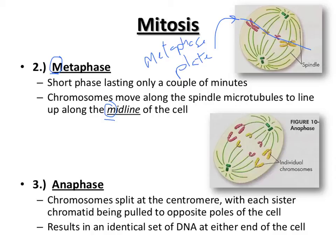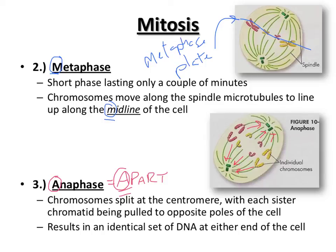The third part of mitosis is anaphase, remembered as 'apart.' The chromosomes split at their centromere, and the sister chromatids are pulled to opposite ends of the cell. This moves half of the duplicated DNA to one end and the other half to the other end, leaving two full sets of DNA — one copy at each end of the cell.